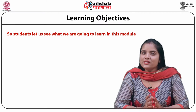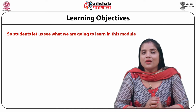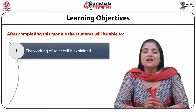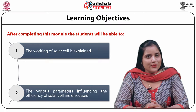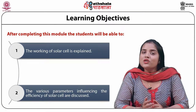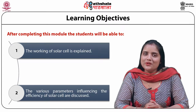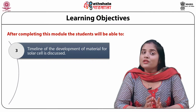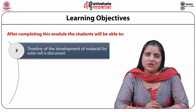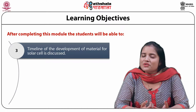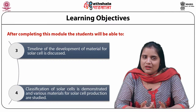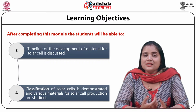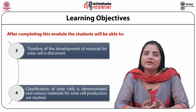Let us see what we are going to learn in this module. The working of solar cell is explained. Also, the various parameters which influence the efficiency of solar cell are discussed. In addition, the timeline of the development of material for solar cells is discussed. Finally, the classification of solar cells is demonstrated and various materials for solar cell production are studied.